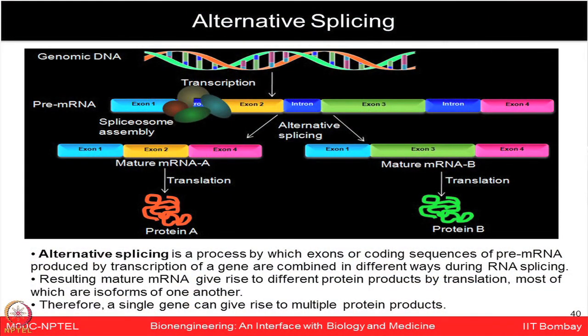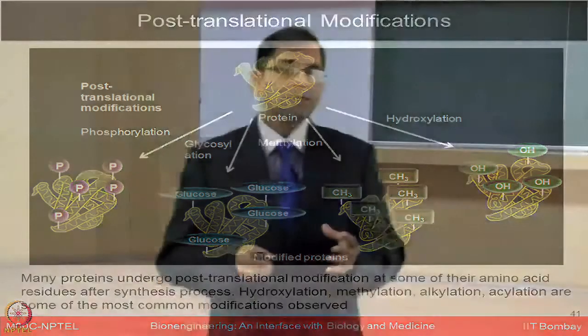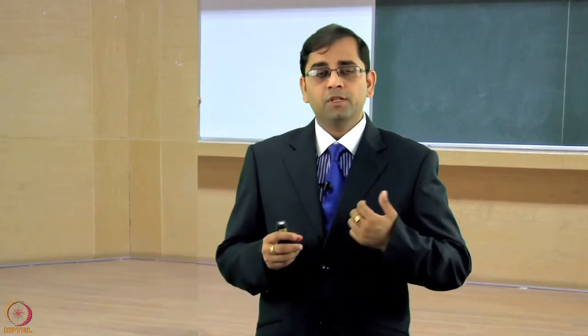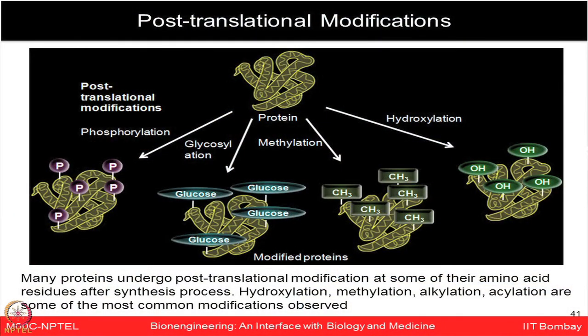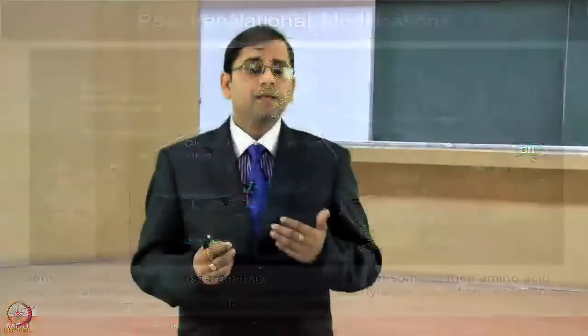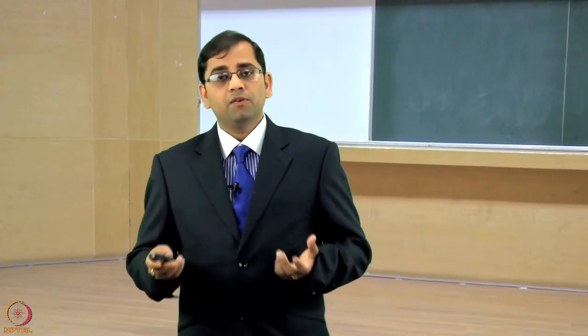As shown in the picture, from a single pre-mRNA, mature mRNA A and mature mRNA B are formed, giving rise to protein A (red) or protein B (green). After proteins are synthesized, further modifications may happen at the protein level — post-translational modifications. Many proteins undergo post-translational modification at amino acid residues: sugar moieties can be added (glycosylation), phosphate groups (phosphorylation), hydroxylation, methylation, alkylation, or acetylation. These many kinds of modifications make the protein very different functionally.